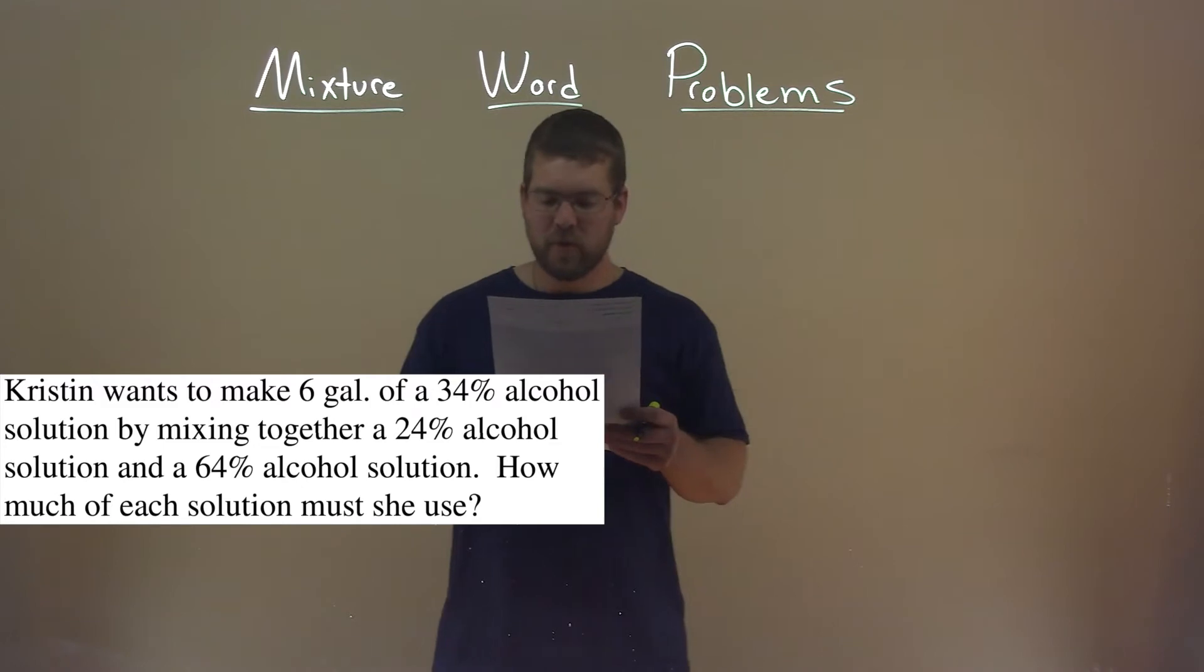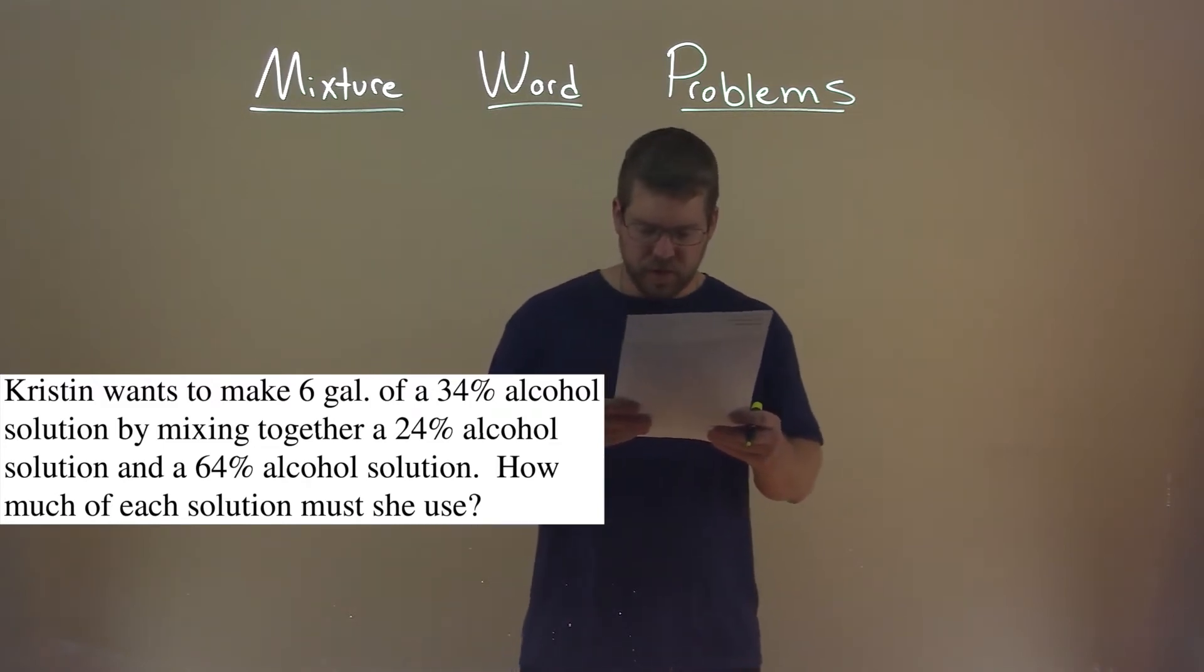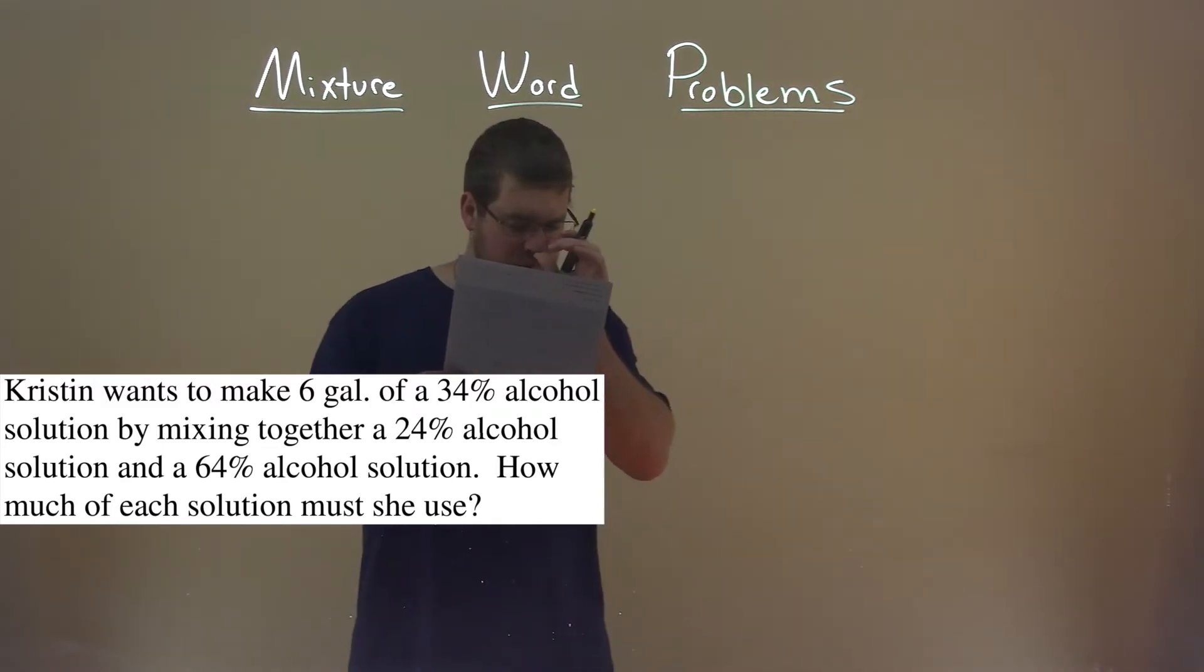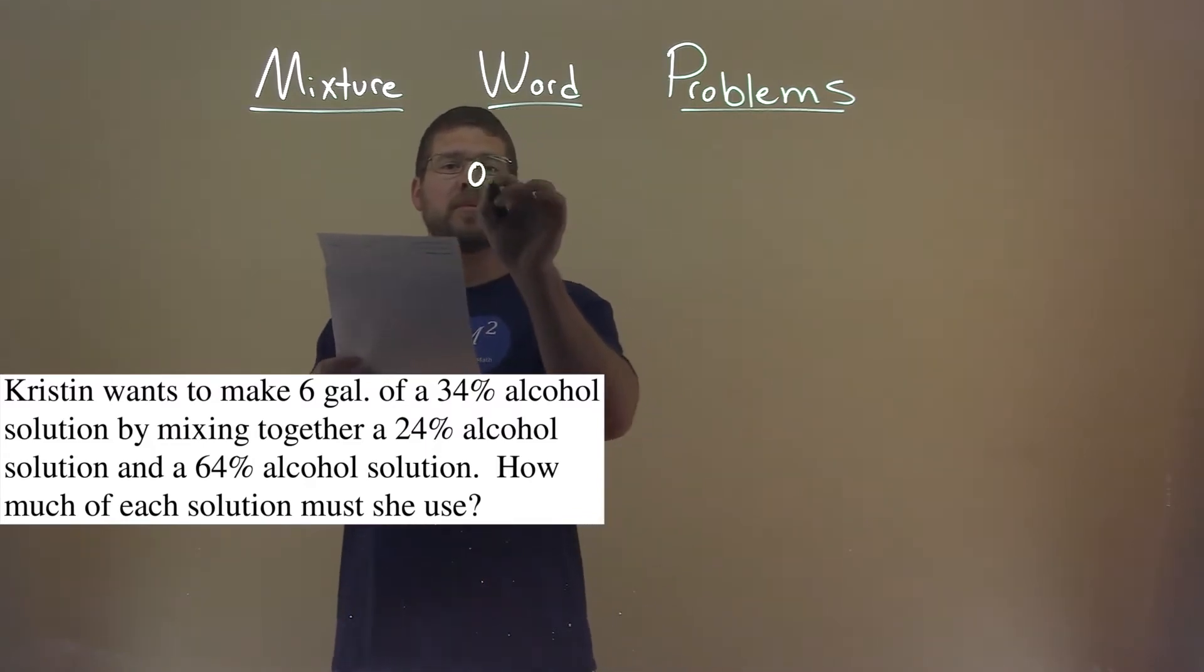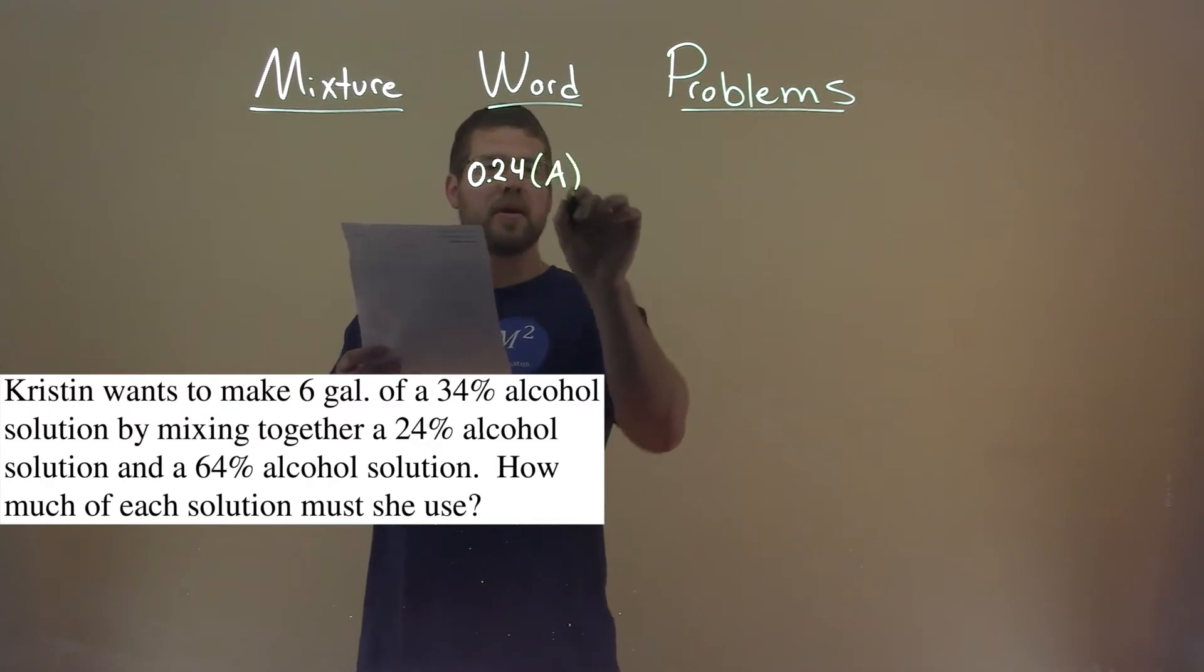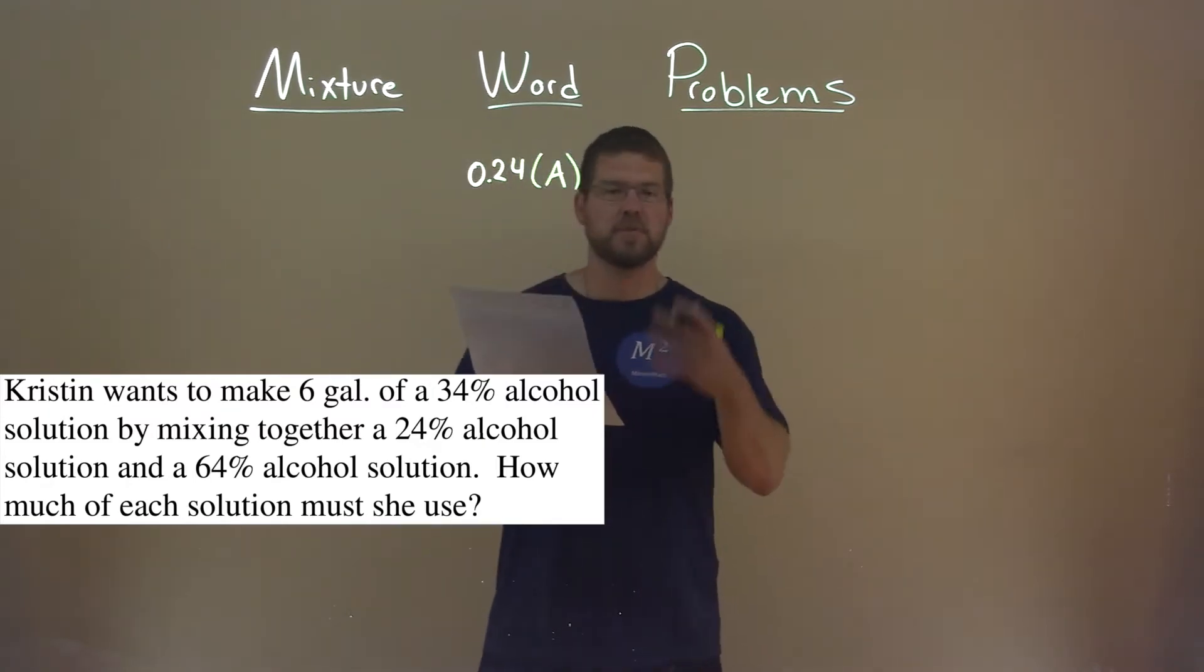Okay, so our first solution here, the individual one, is 24% alcohol. So we have it as a decimal, 0.24, 24%, times the amount of solution A, or the first solution we'll call it solution A.